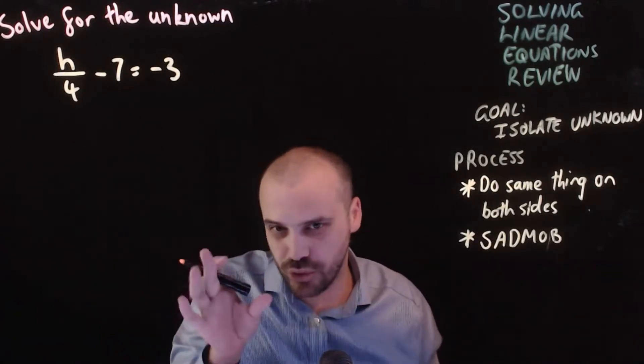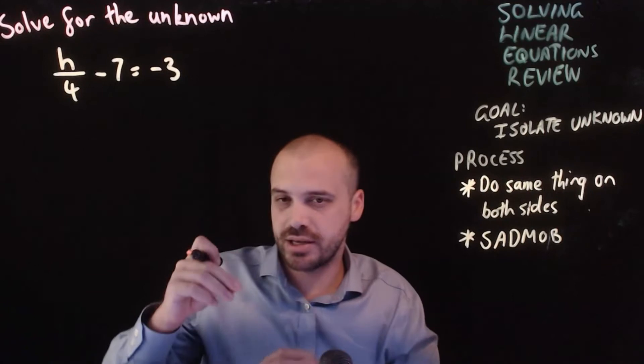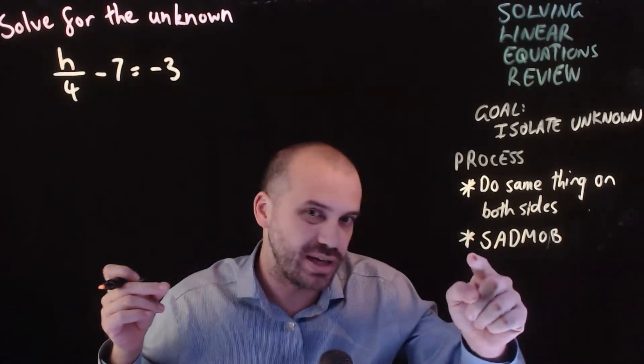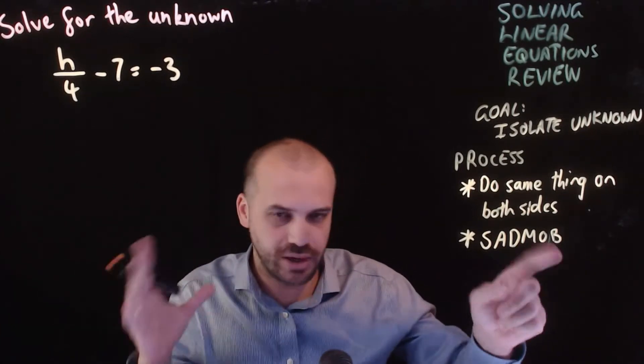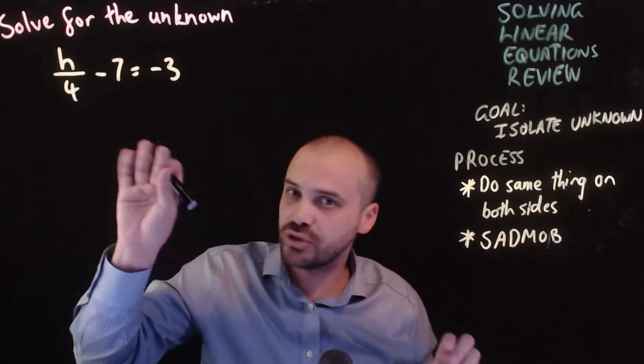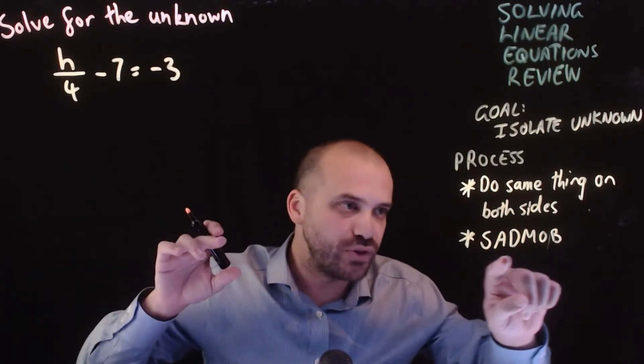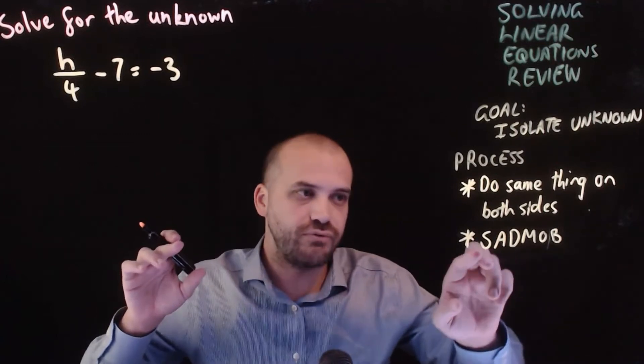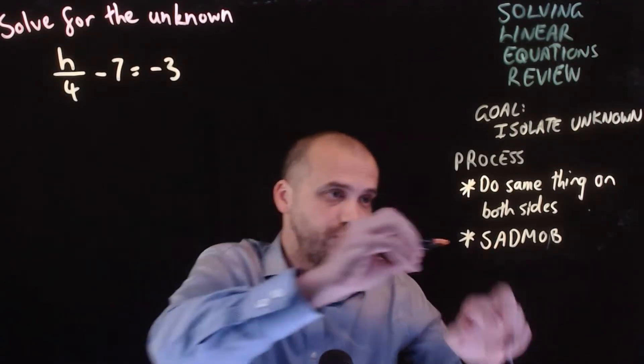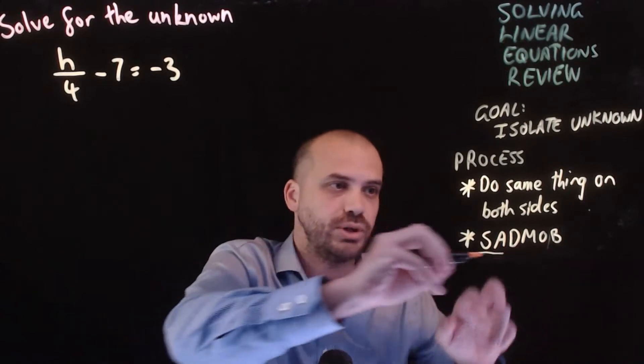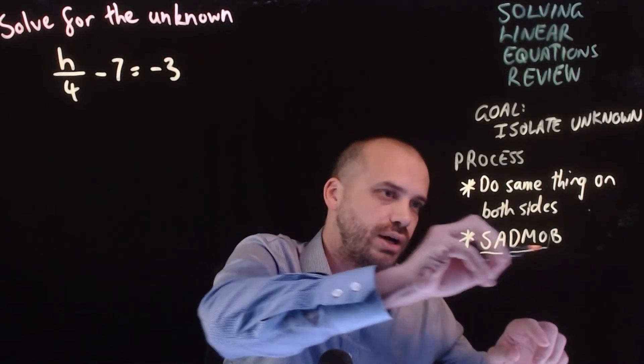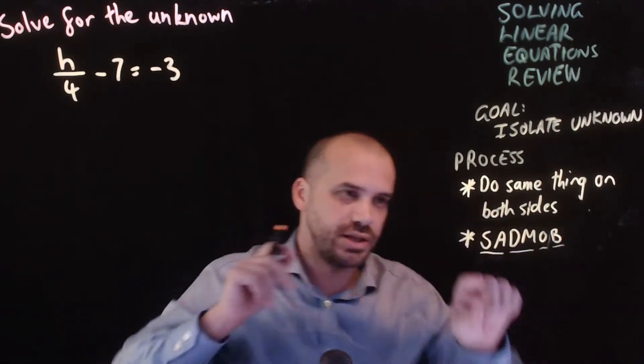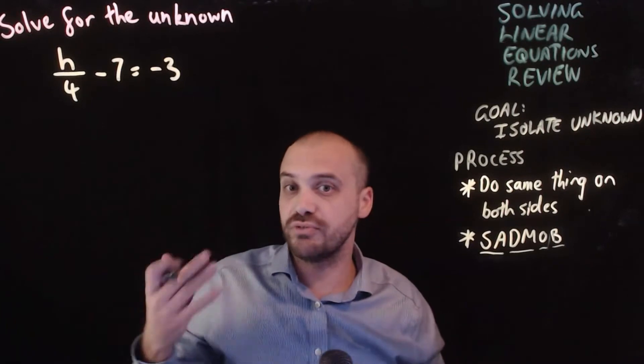The other thing is the order of operations. Now you might be used to operating on a number and using the order of operations, BOMDAS or BIMDAS or PEDMAS or PEMDAS, whatever it might be. When you are trying to solve for an unknown, you are reversing the order of those things. SadMob. So first you look for subtraction and addition. Do those things first. Then you look for division and multiplication. Do those things next. Then you do order or indices. And then finally you do brackets. If you work in that order, you can't go too far wrong.